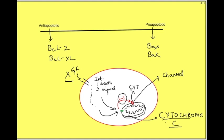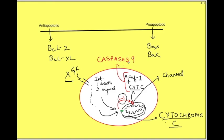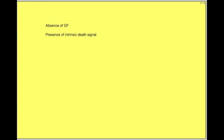As already mentioned, cytochrome C is the triggering factor for apoptosis. When cytochrome C is released, it binds with another protein, APAF-1. This complex of cytochrome C and APAF-1 then activates caspases. In the case of these signals — absence of growth factor or the internal death signal — the caspase activated is caspase-9. These caspase-9 molecules, previously present in inhibitory form as pro-caspases, become active caspases. So either the absence of growth factors or presence of an intrinsic death signal leads to release of cytochrome C from the mitochondria, which activates caspase-9.